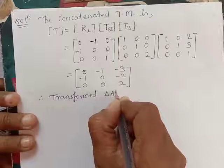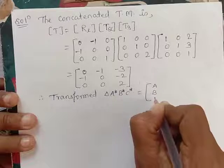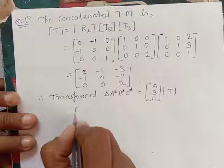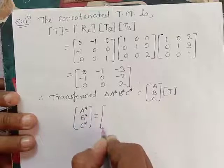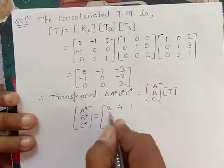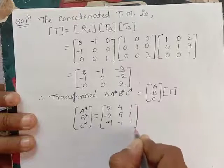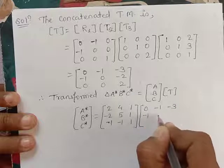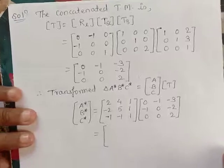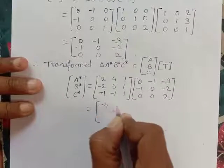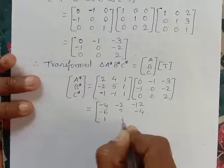A*, B*, C* equals ABC into T. So [2,4,1; −2,5,1; −1,−1,1] multiplied by [0,−1,−3; −1,0,−2; 0,0,2] gives the matrix [−4,−2,−12; −6,2,−4; 1,1,7].